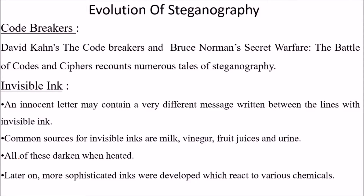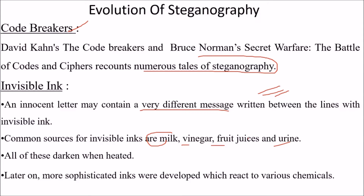The evolution of steganography is well documented in works like David Kahn's 'The Codebreakers' and Bruce Norman's 'Secret Warfare,' which contain numerous tales of steganography. Invisible ink is a classic example — innocent letters may contain very different messages written between the lines with invisible ink. Common resources for invisible inks were milk, vinegar, fruit juices, and even urine, all of which darkened when heated. Later, more sophisticated inks were developed that react to various chemicals.